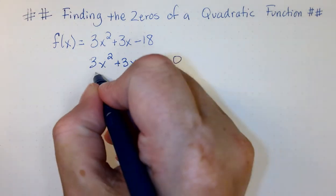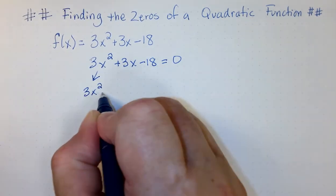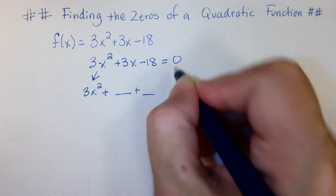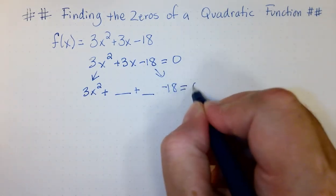We're going to bring down the first term, 3x squared, add two blanks, and bring down the last term, negative 18. And this will still be equal to zero.